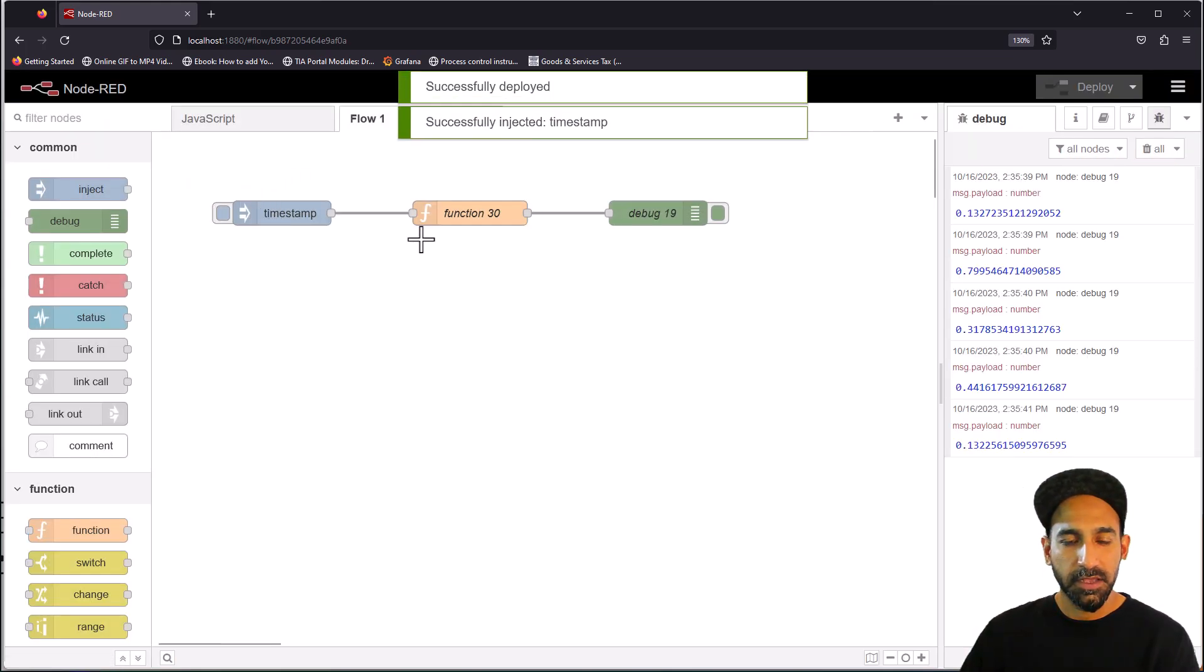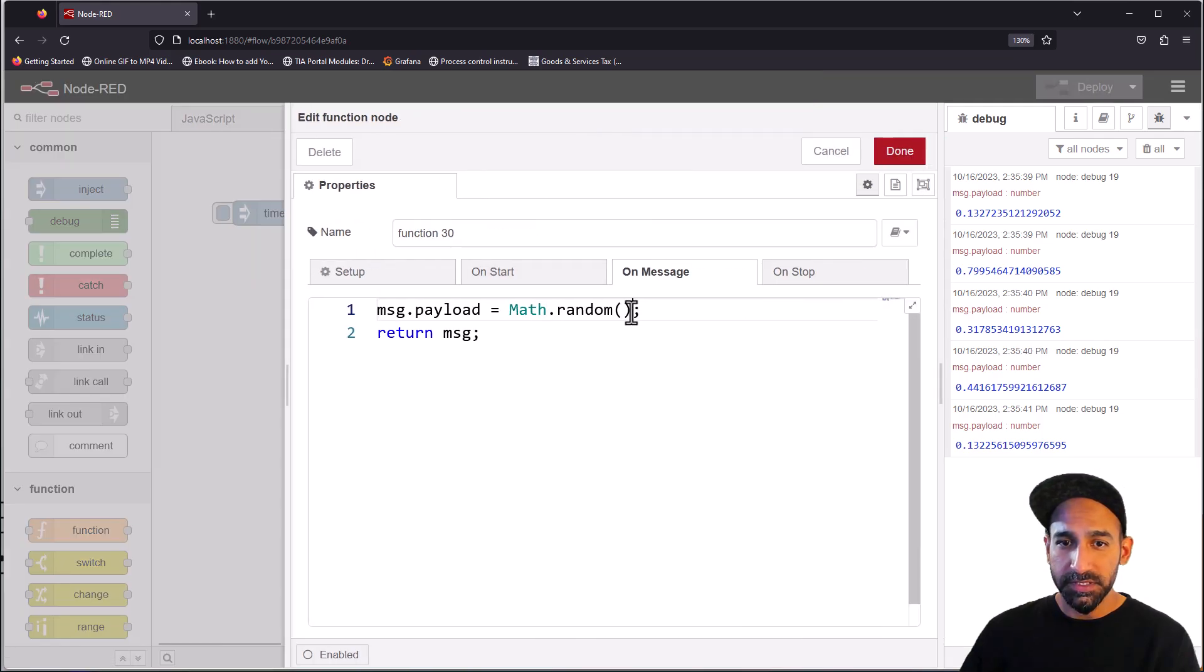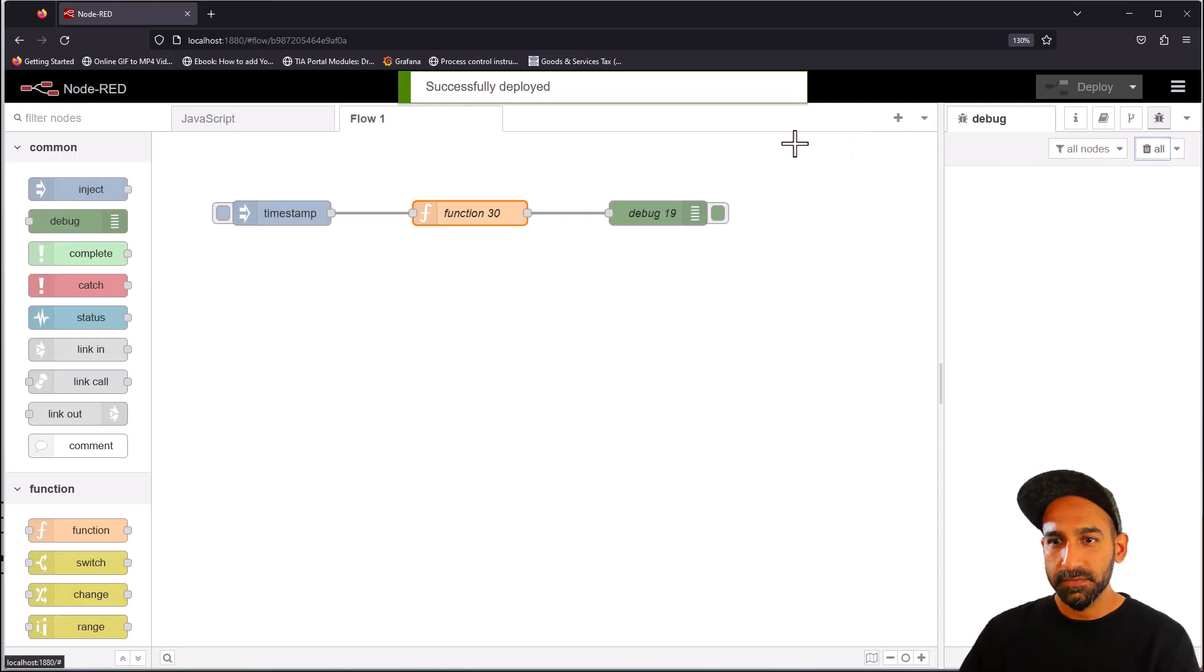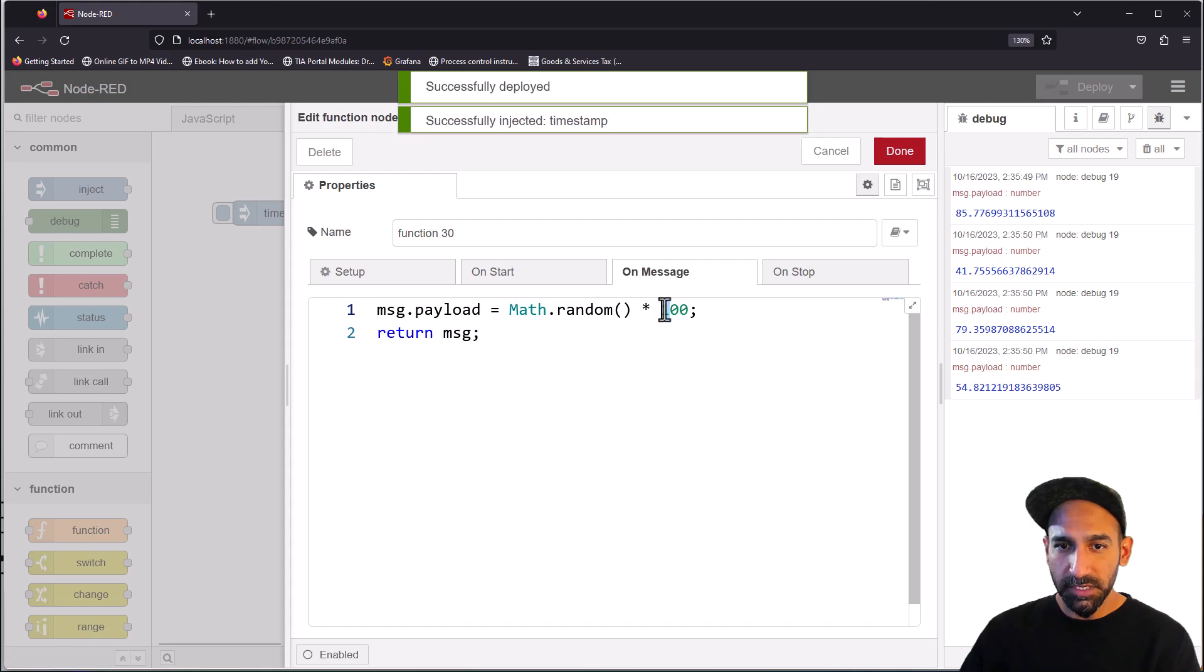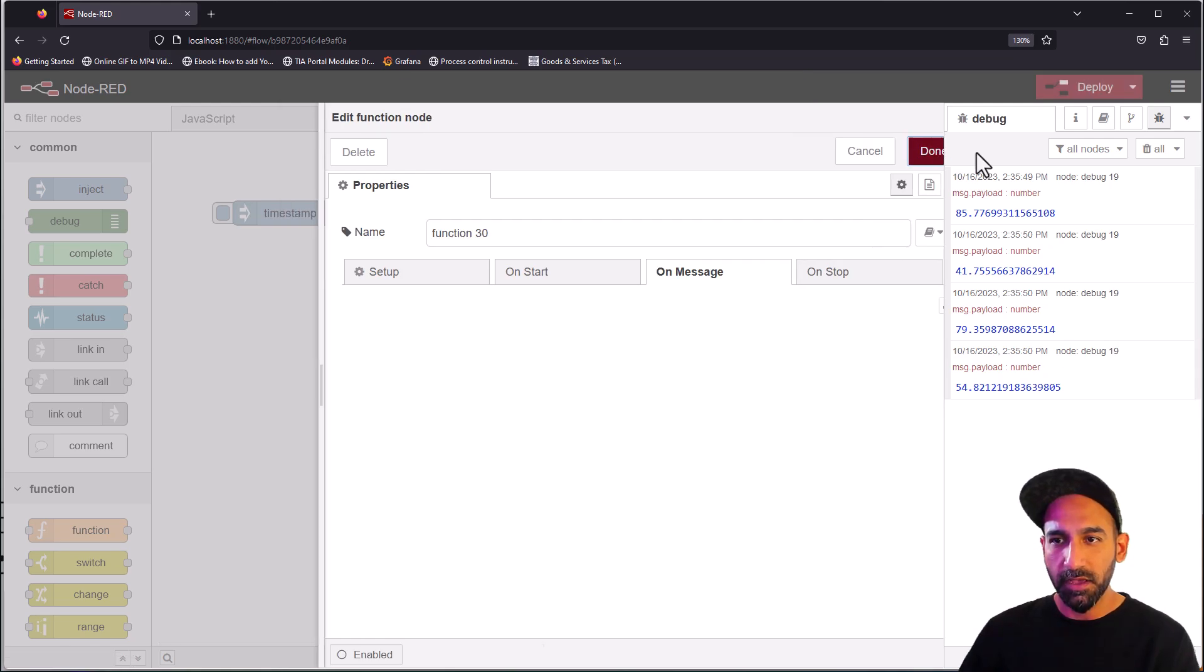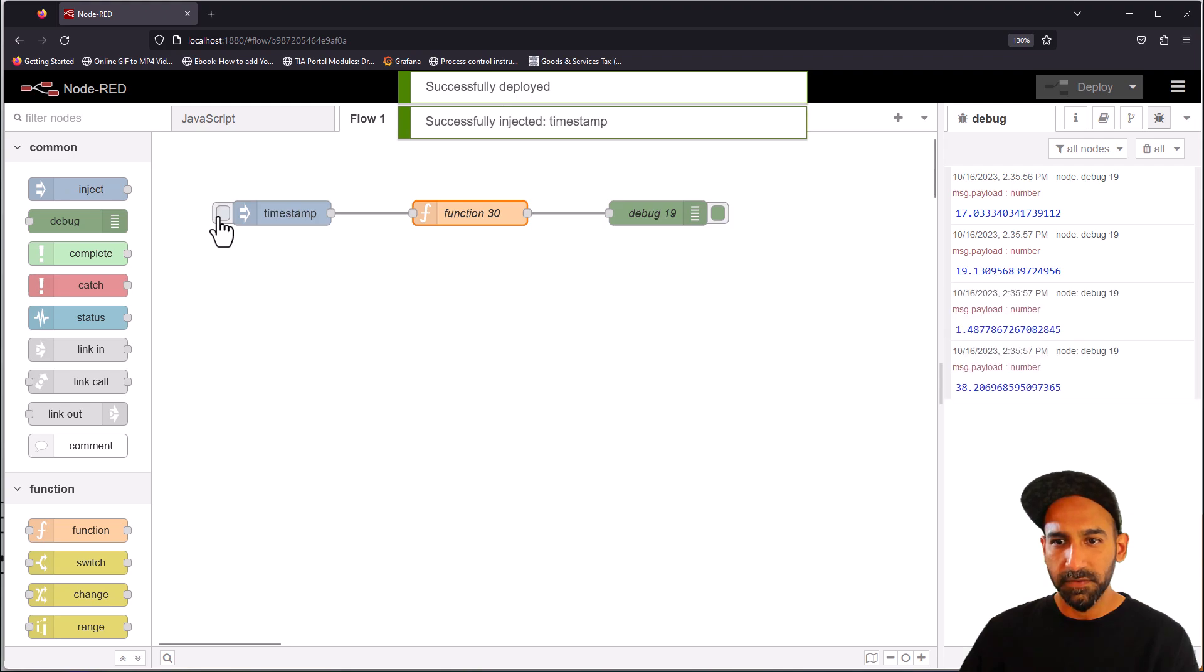Now you can see my number is coming randomly. If I want a number between zero and one hundred, just multiply with one hundred. Super easy. If you want a number between zero and fifty, multiply it by fifty. You have your random number between zero and fifty.